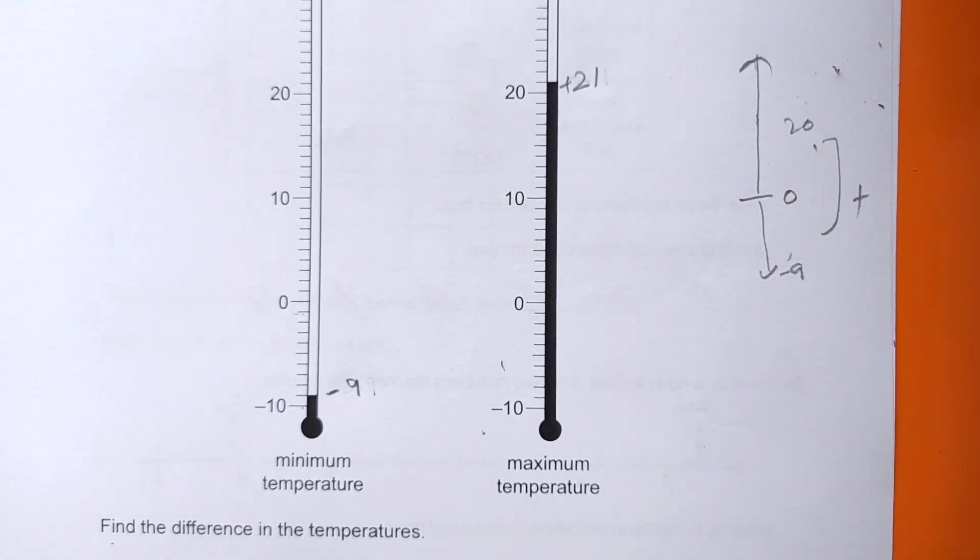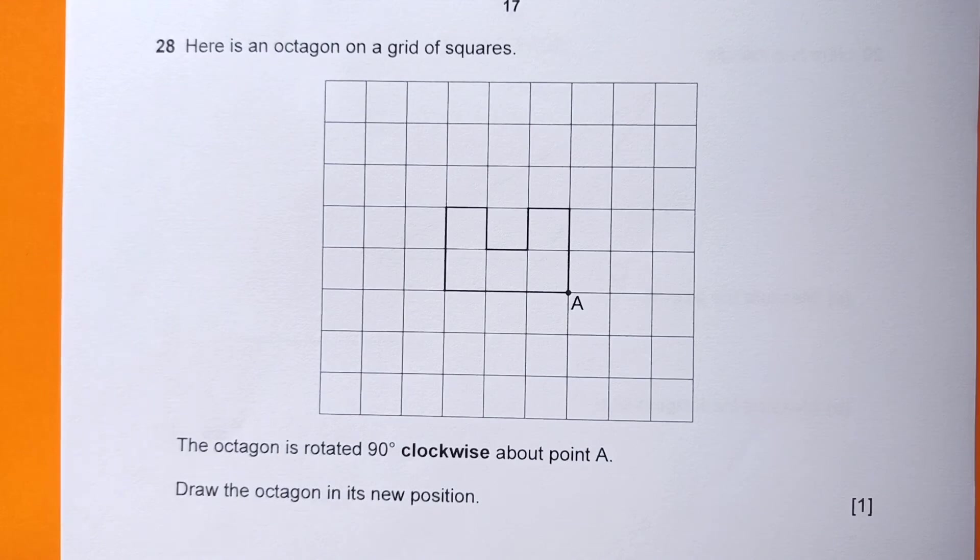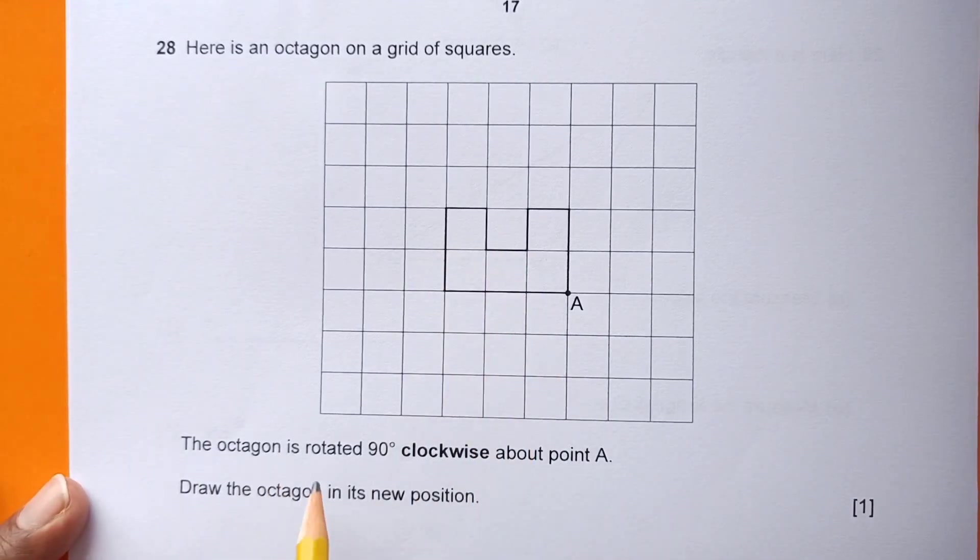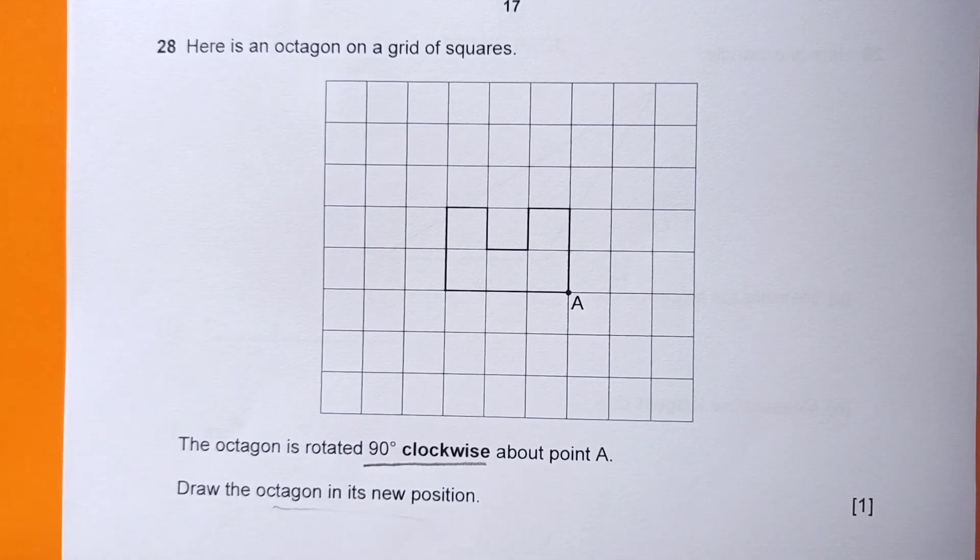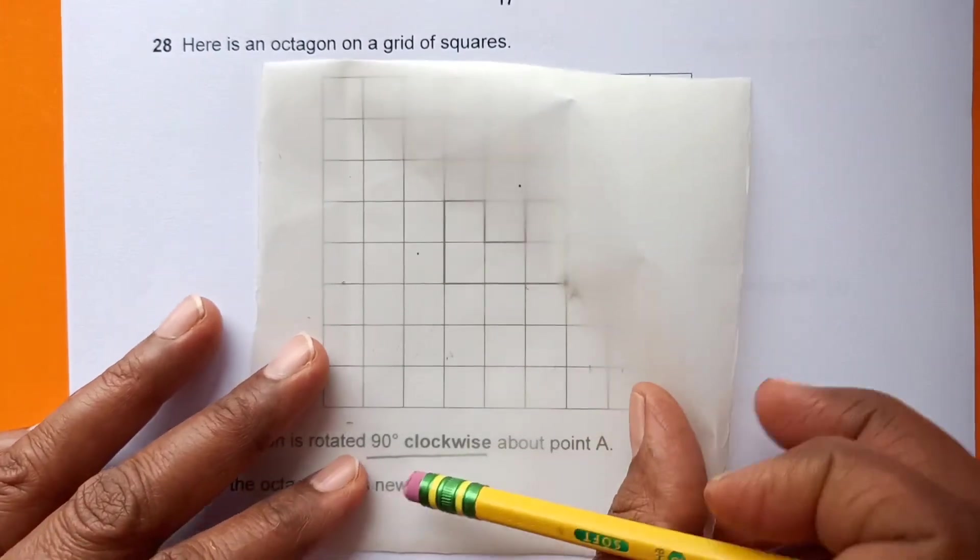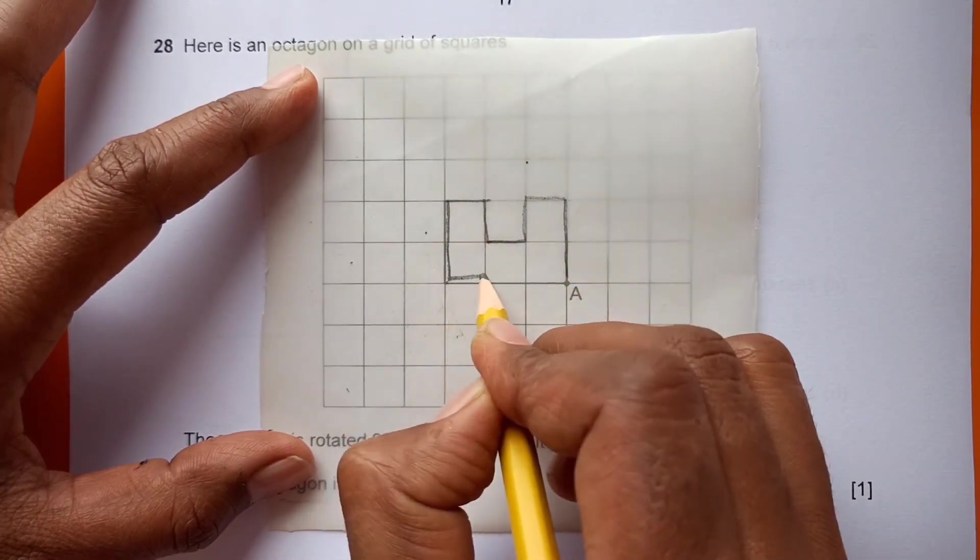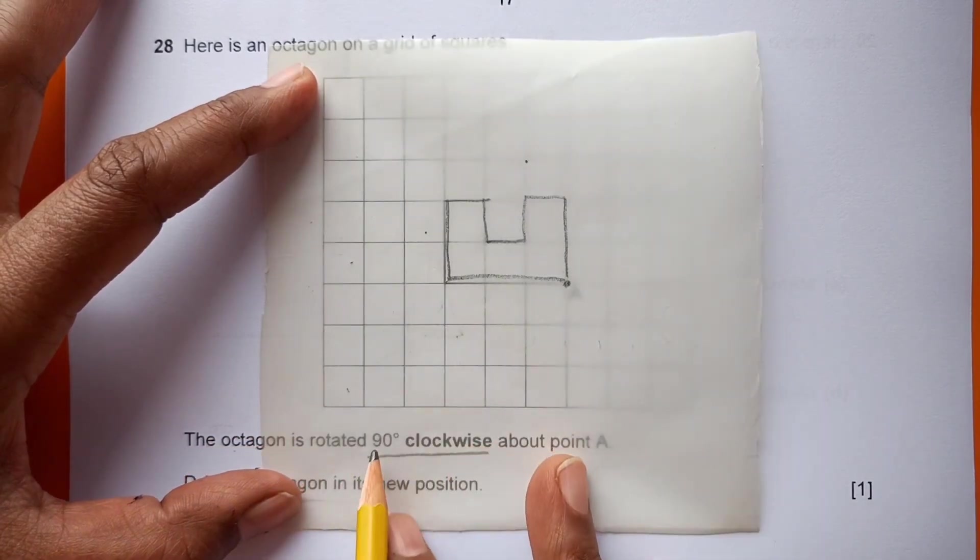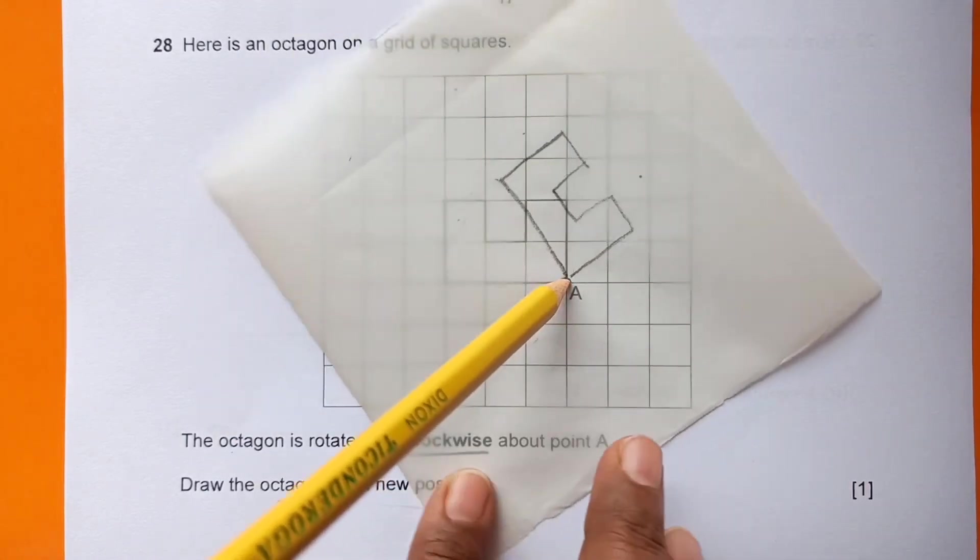Question 28: Here is an octagon on the grid of squares. The octagon is rotated 90 degrees clockwise about point A. Draw the octagon in its new position. We need tracing paper for that. Let me take my tracing paper. We have to draw first this octagon here - we can trace this one. This is point A. We're rotating it 90 degrees clockwise about point A, so we need to put our pencil at point A and then rotate it like this one time.